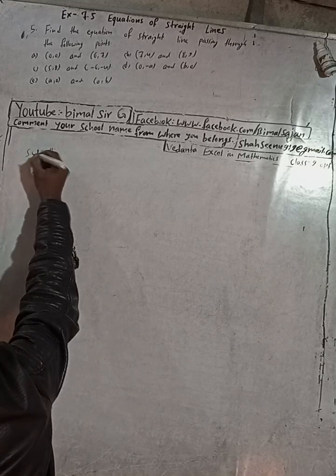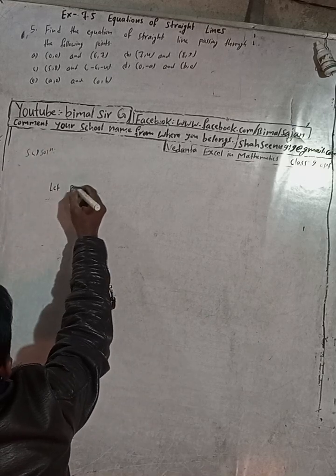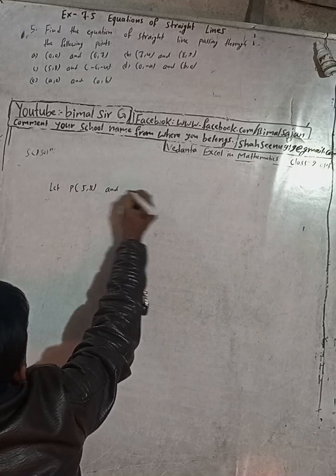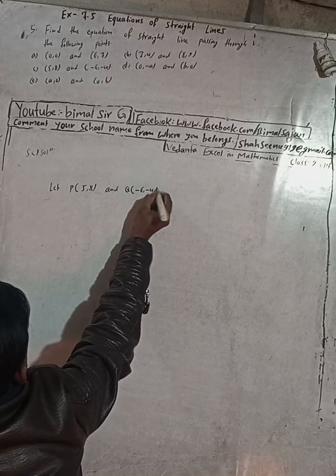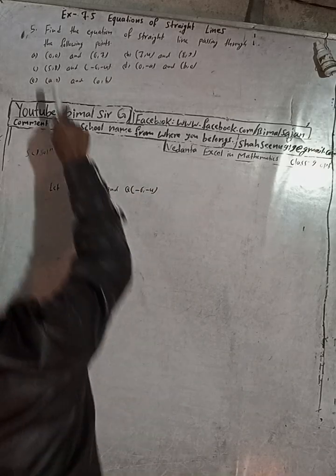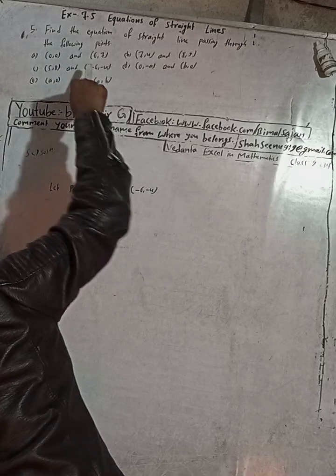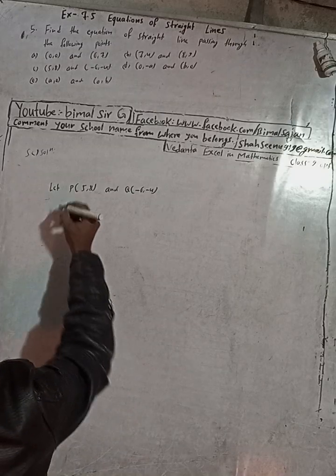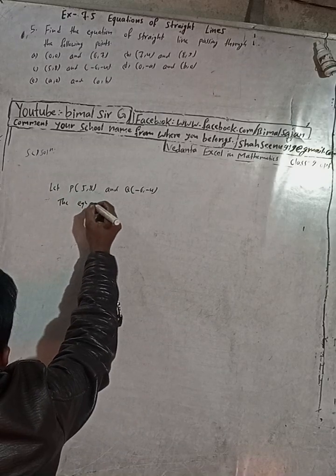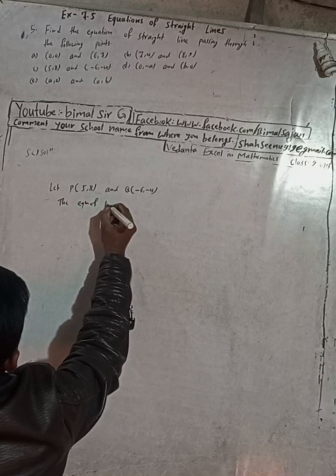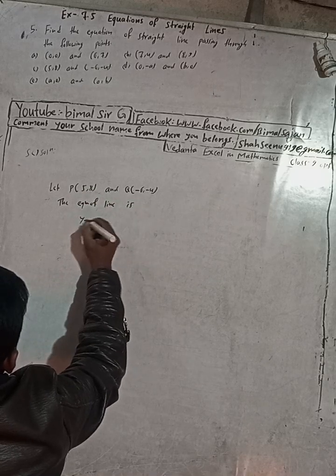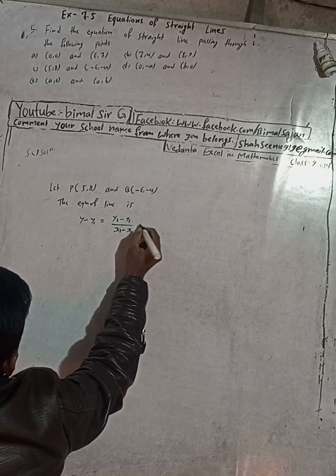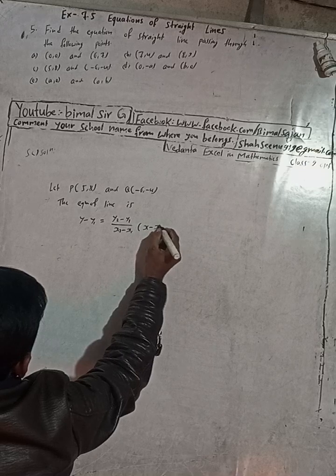Now question 5c. Let P be (5, 8) and Q be (-6, -4). The equation of the line is y minus y1 equals (y2 minus y1) over (x2 minus x1), into (x minus x1).